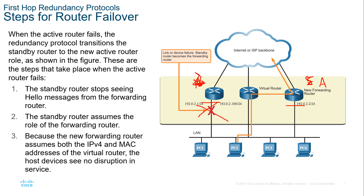When the standby router stops seeing hello messages from the forwarding router, it assumes the role of the forwarding router and becomes the new active router. Because the new forwarding router assumes both the virtual IP and virtual MAC address of the virtual router, host devices will not see any disruption — they're still forwarding data to the same virtual MAC and IP. However, any session states on the original active router will terminate. Recovery is active fairly quickly.